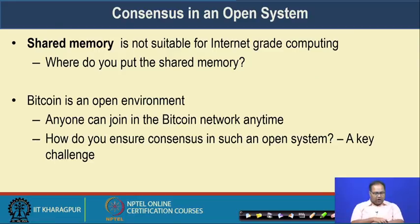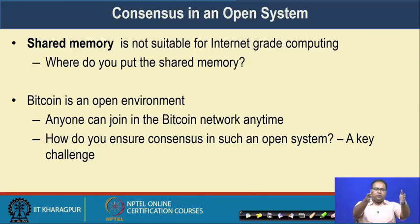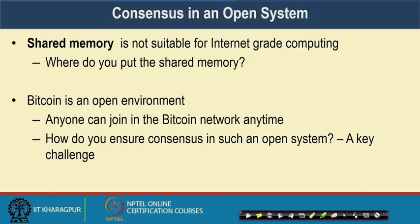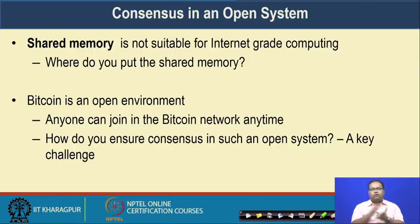In an open environment like Bitcoin, you do not know who the nodes are in your periphery to whom you want to send a message. That way, this kind of distributed message passing algorithm for consensus was mostly designed for a closed environment. For a blockchain type environment in Bitcoin applications, we are mostly talking about the open environment — or what we earlier called a permissionless environment — where any node can join the network any time. Under this kind of environment, having a consensus protocol based on the message passing argument is difficult. We have two broad types of algorithms for consensus in an open system: shared memory architectures, which are not suitable for internet-grade computing because you need a memory readable and writable by every individual node; and message passing, which as we have seen is not feasible in an open environment like Bitcoin where anyone can join any time.